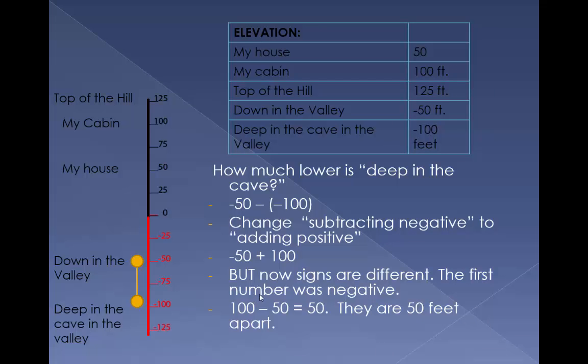So how much lower is deep in the cave? Negative 50 minus negative 100. If we change subtracting negative to adding positive, we get negative 50 plus 100. But now, the signs are different. We're starting with a negative number. 100 minus 50 is 50. They're 50 feet apart.